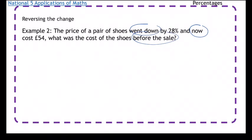So the price has dropped by 28% and it's now £54, so we would expect our answer to be more than £54. So this time, 100% and we're going to take away 28%, which gives me 72%. So that £54 is equal to 72%.